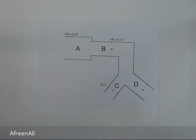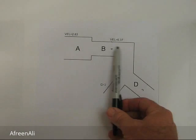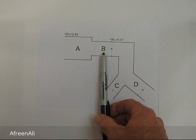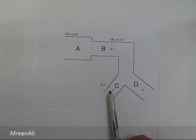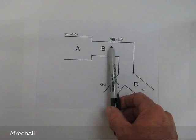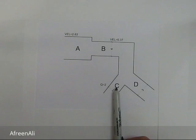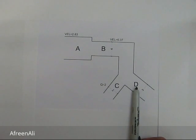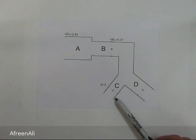Given a pipe system shown in the diagram, we've got four pipes. A runs into B, and B runs into C and D. We're given some information: the velocity of flow at A, the velocity of flow at B, the flow rate at C, but not the flow rate at D. We're also given the diameter at B and the diameters at C and D.